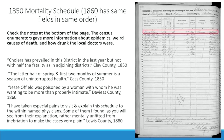The 1850 and 1860 mortality schedules have the exact same fields in the same order. 1870 and 1880 add information about physicians but pretty much look the same. The main fields you'll have are age, sex, race, whether the person is free or slave, married, place of birth, the month they died, their occupation, their cause of death, and their number of days ill. You want to pay attention to notes at the bottom of the page, where census enumerators would provide information about epidemics in the area, unusual causes of death, and even notes about the local doctors.